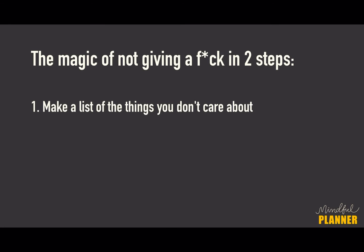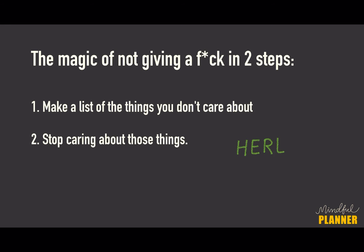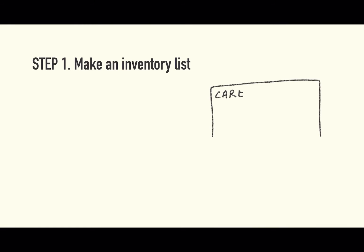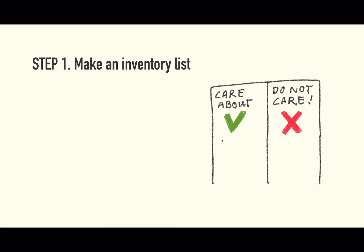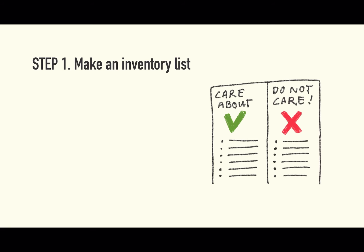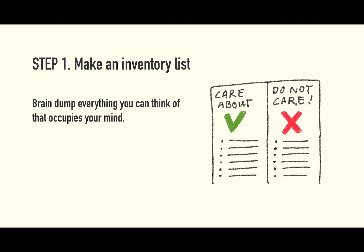The method is very simple. Make a list of the things you don't want to care about anymore and stop caring about those things. Step 1 is to make an inventory list about the things you do and don't care about — brain dump everything you can think of that occupies your mind, whether you want it or not.